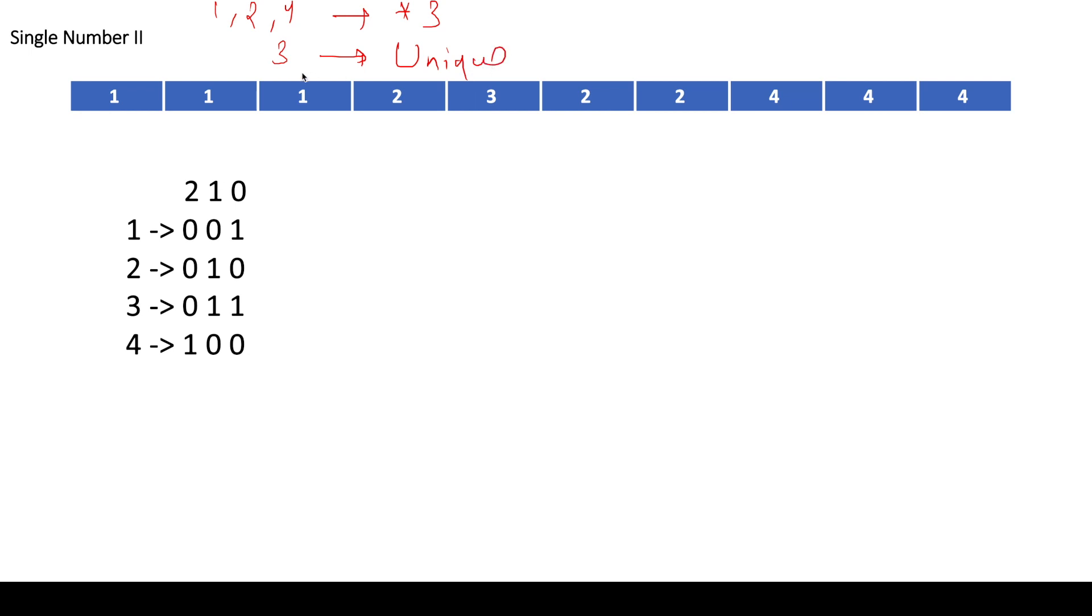So somehow we have to return this number 3, correct? Over here, I have represented these numbers in their binary format. Now this number 1 is actually present three times. This number 2 is present three times. 3 is present only once and 4 is present three times.